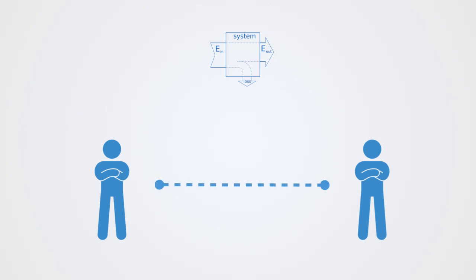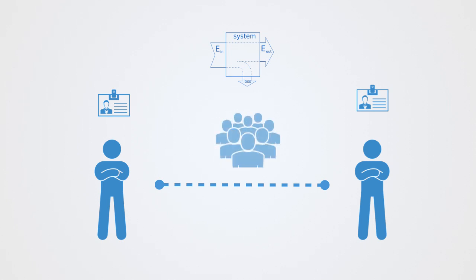We'll talk about the idea of social agency and the different types of relations between these agents. Finally, we'll talk about the type of social structure that emerges out of these relations and the dynamics of social systems as they change over time.